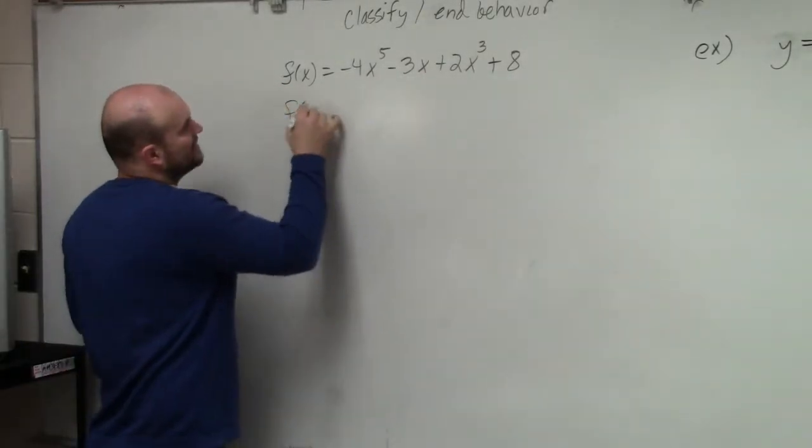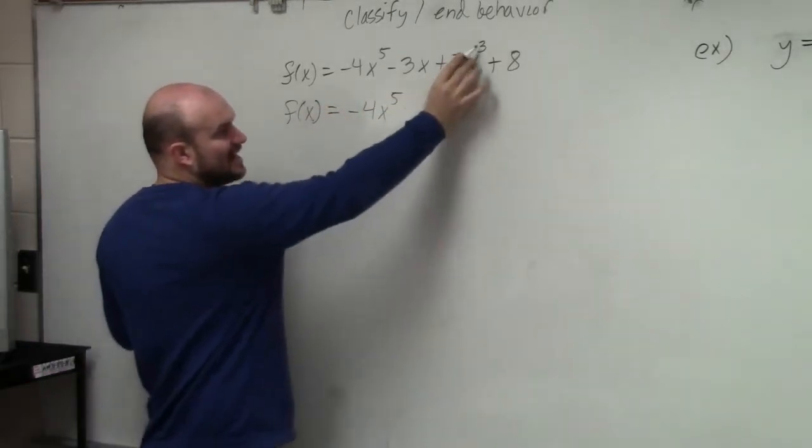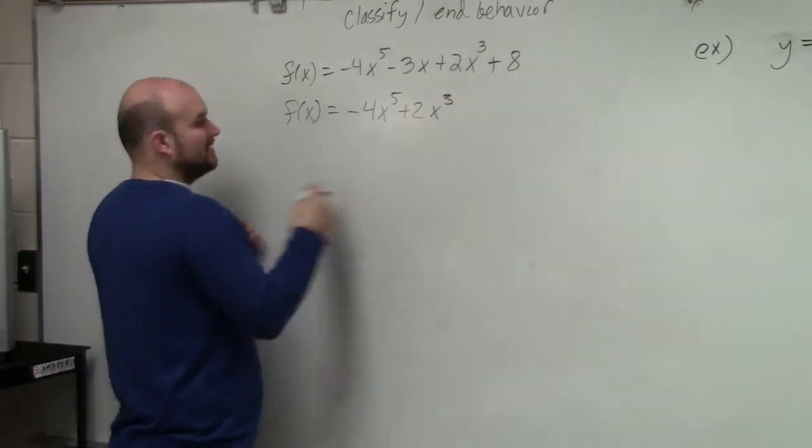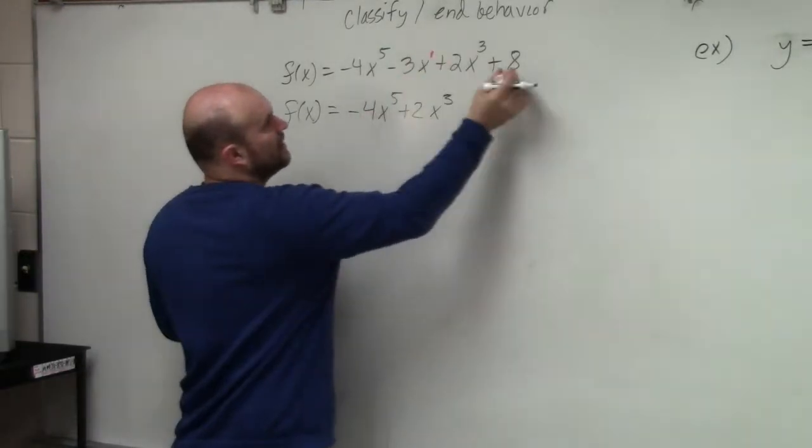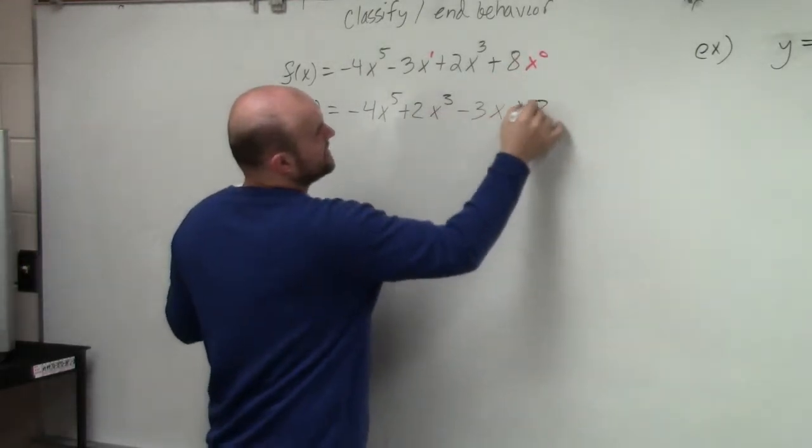So I write f of x equals negative 4x to the fifth. The next highest power is 3 plus 2x cubed. The next highest one is 1. And then this is really x to the 0. So you do minus 3x plus 8.